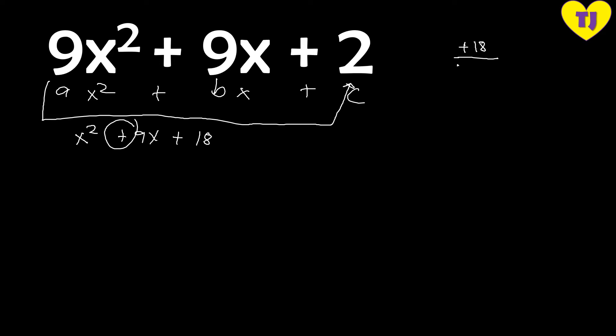Starting with 1 and 18: 1 plus 18 equals 19, but our b is 9, so that doesn't work. Next, try 2 and 9: 18 divided by 2 is 9, and 2 plus 9 equals 11 — that's not our middle term either.